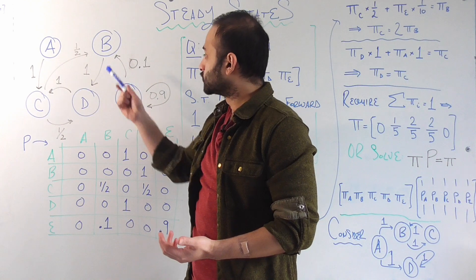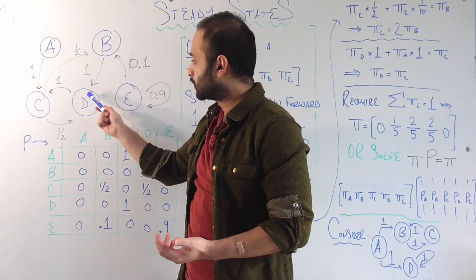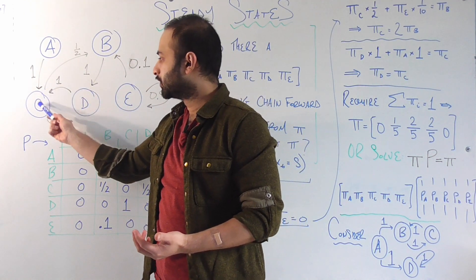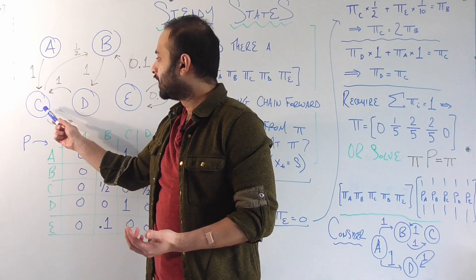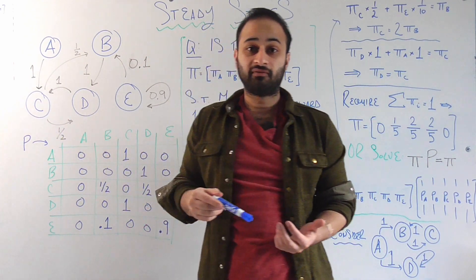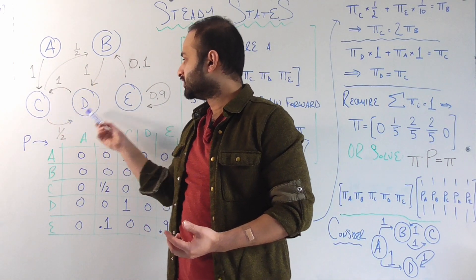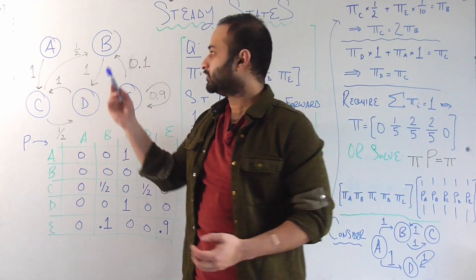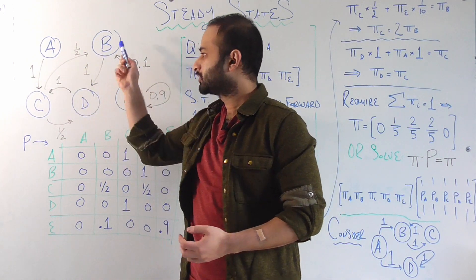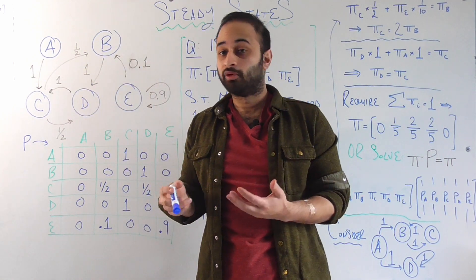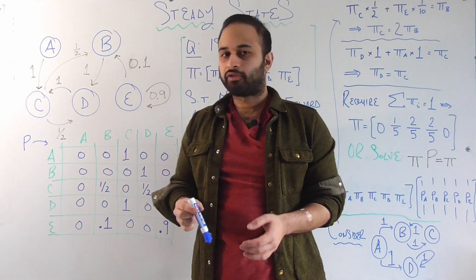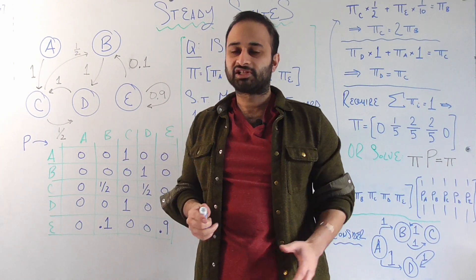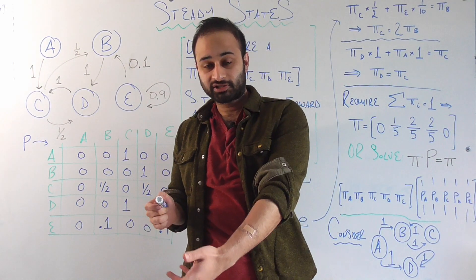Keep those ideas in mind — they're going to come up again with the calculation of the steady state. If we look at B, C, and D, there's a little bit more interesting dynamics going on. If we're at B, there's a 100% chance we go to D. From there there's a 100% chance we go to C. And from there there's a 50-50 shot of going to either B or D. So the chain can move freely among these three states, but it can't do so with states A and E.